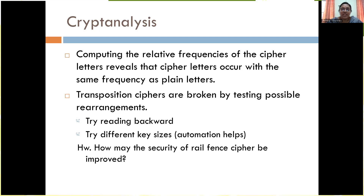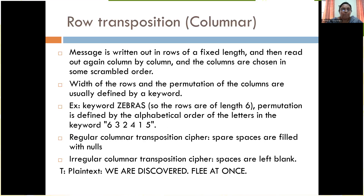For homework, find out what can be done to increase the security or improve the security of the rail fence cipher. The next method is row transposition, also called columnar transposition. Here we fix the number of rows, and the keyword determines the column order — for example, the sixth row written first, then third, then two, four, one, five.